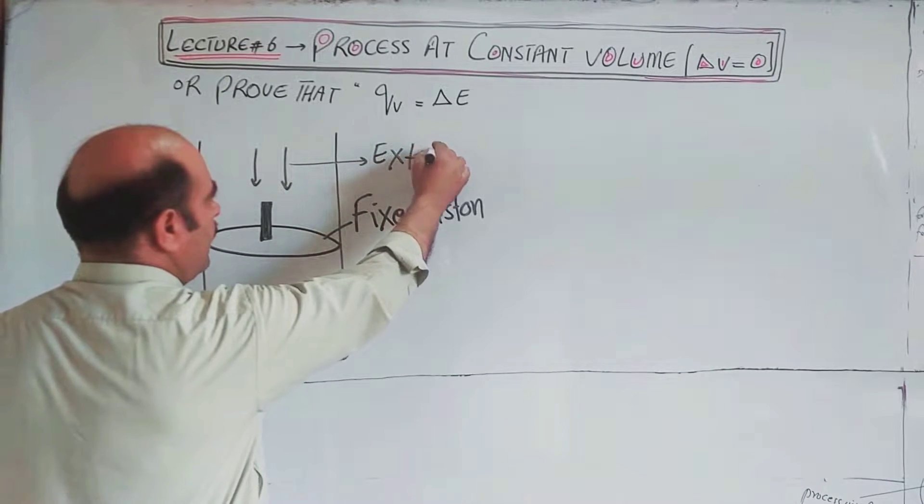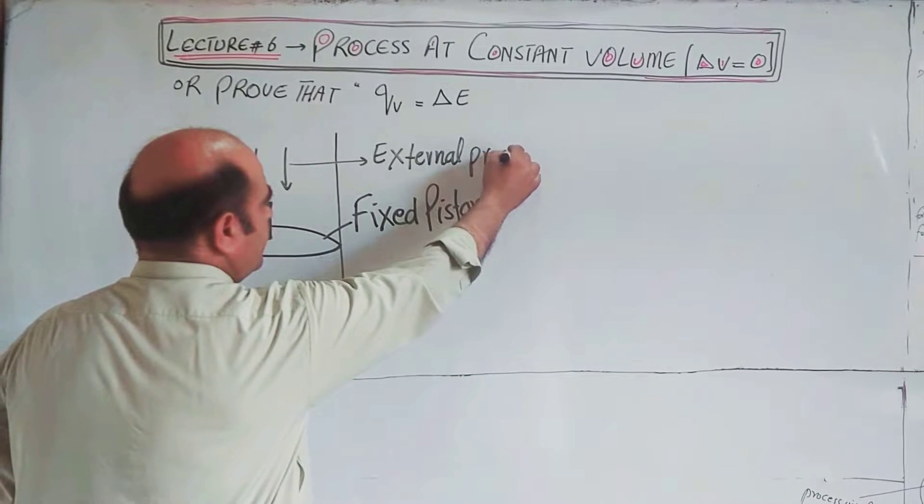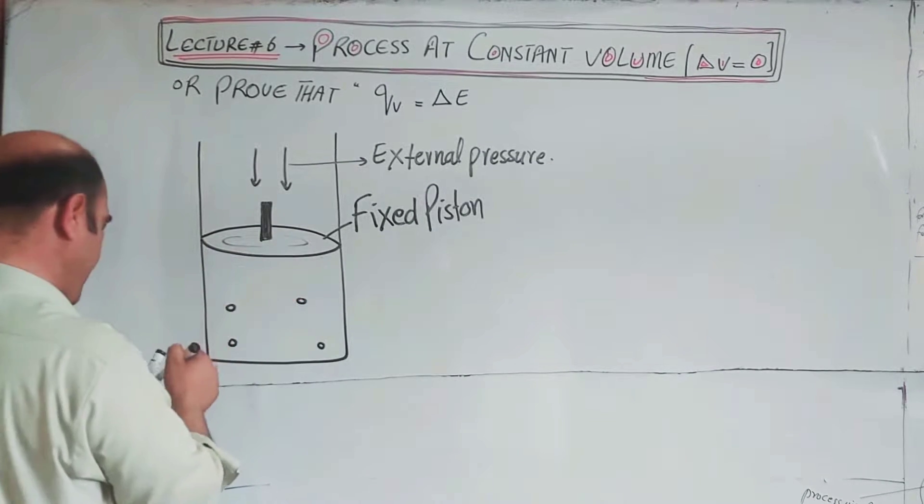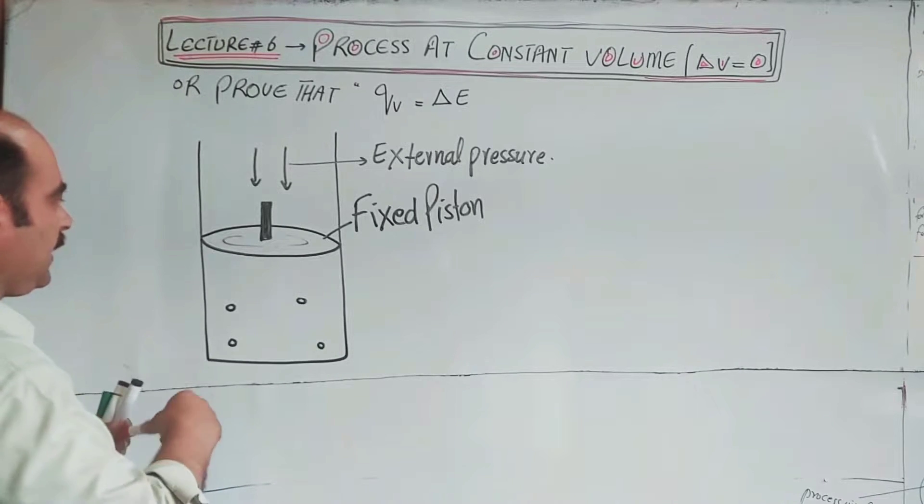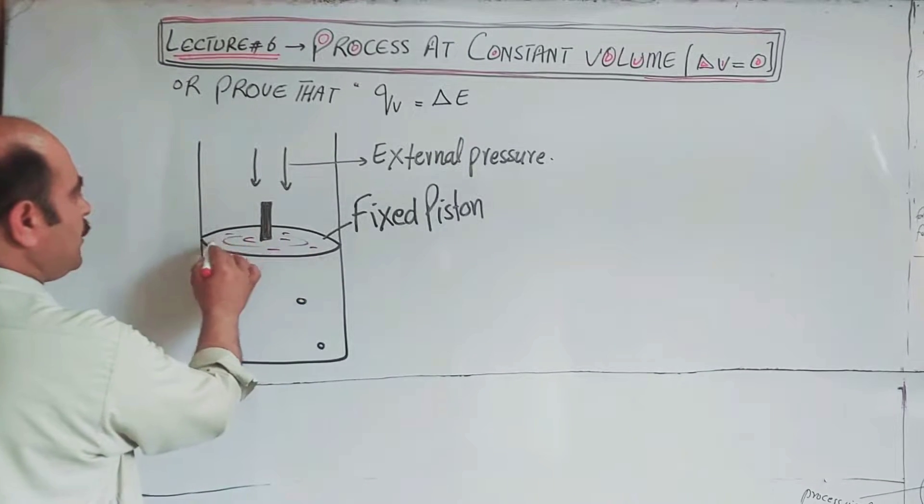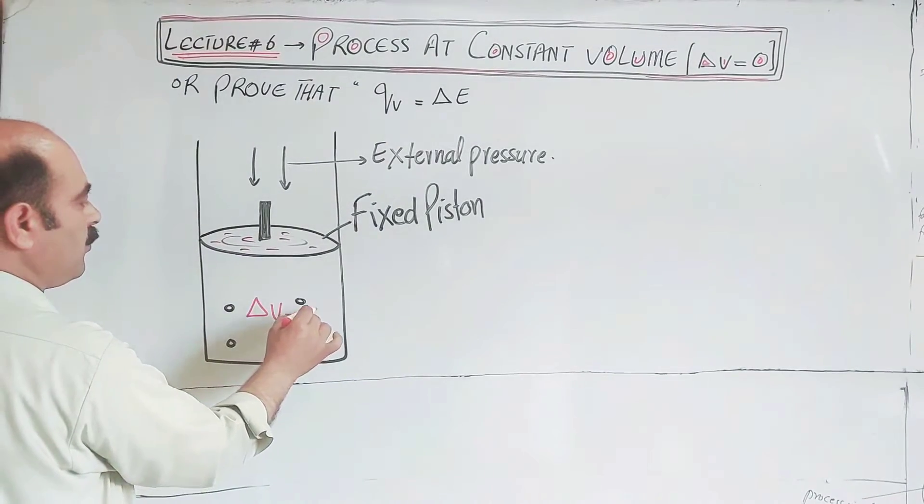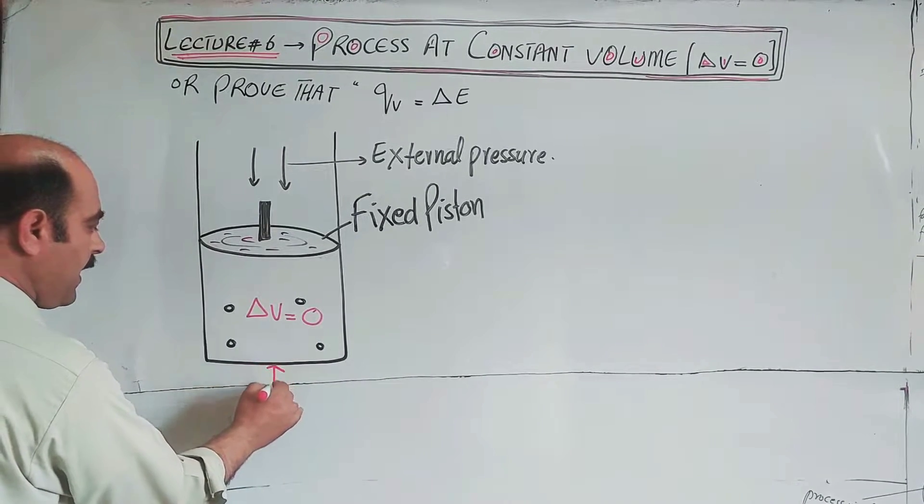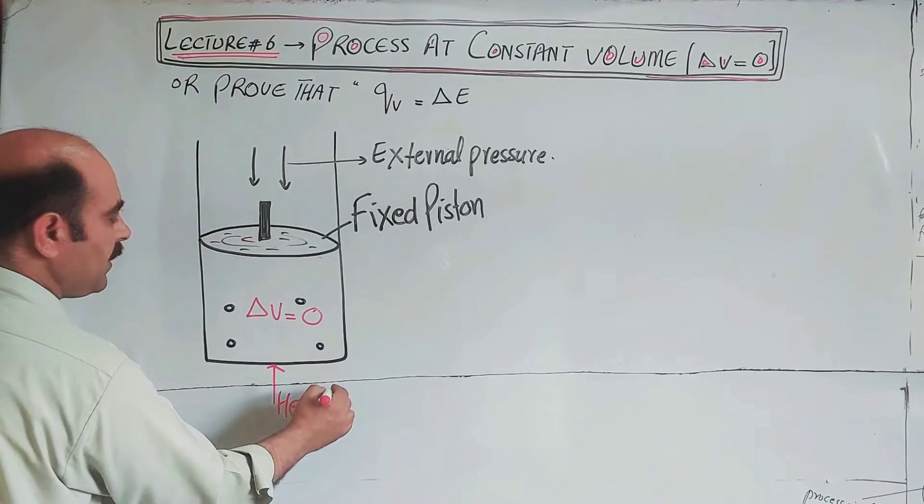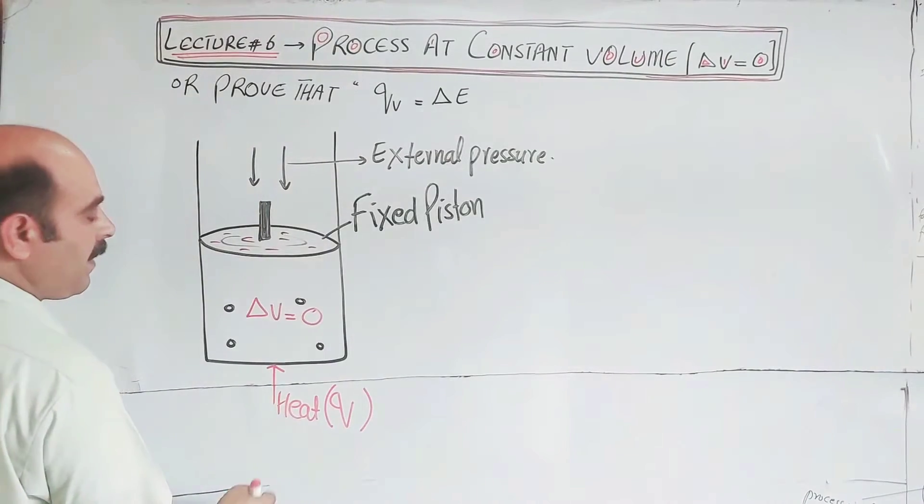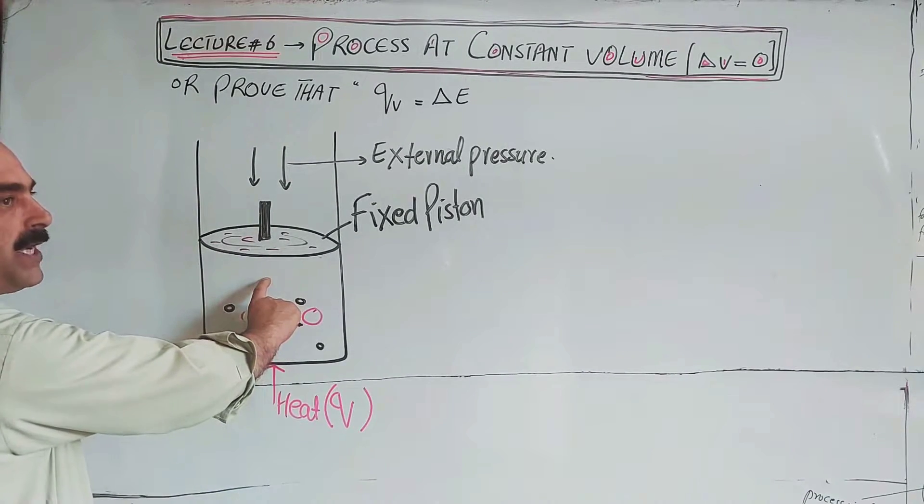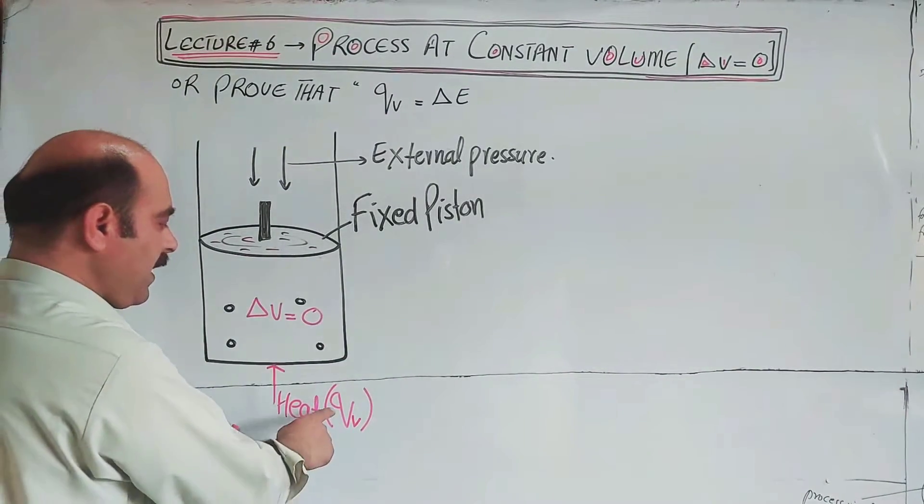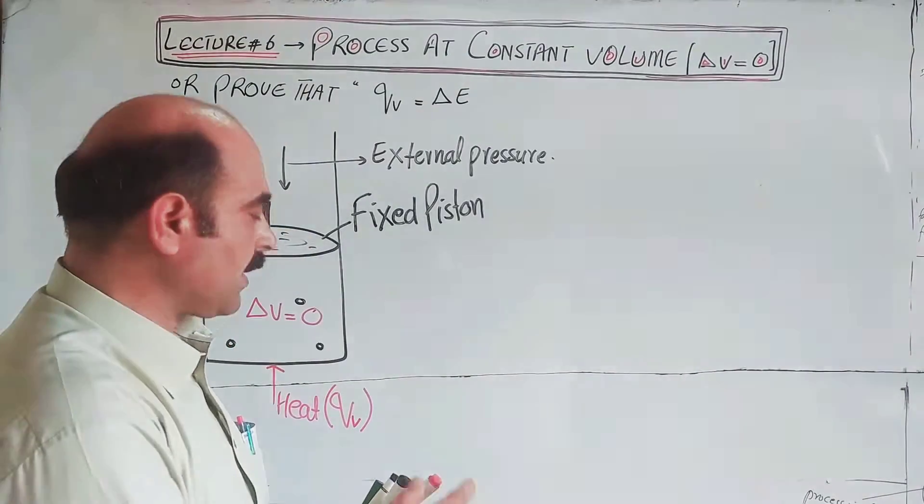External pressure is on the system. The piston cannot move upward, so volume cannot change, meaning delta V is equal to zero. Heat is supplied to this system at constant volume.